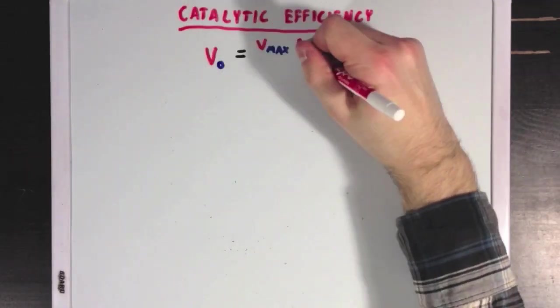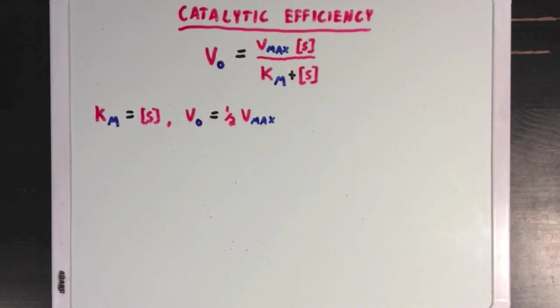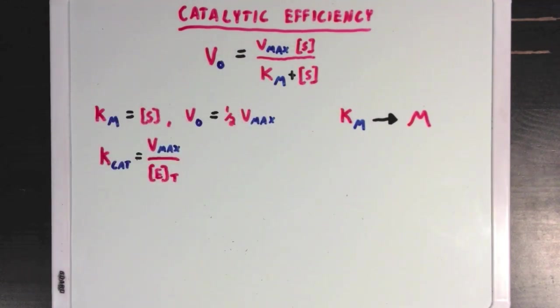So I'll rewrite the Michaelis-Menten equation. Remember we defined Km as a substrate concentration, where VO is one half Vmax, and since it's a concentration it will be in units of molar, or moles per liter. But now I'm going to throw a new term at you, called Kcat, which is equal to the maximum speed of a reaction divided by the total enzyme available.